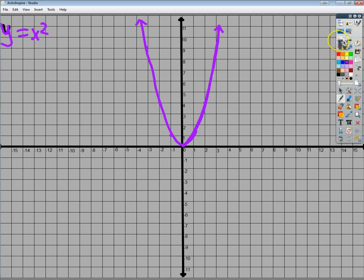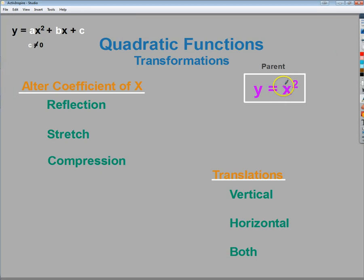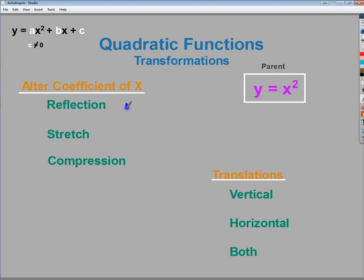Now, from here we're going to deal with the idea of what if we start altering the number, right now it's a 1, what if we alter that number in front of x squared? Specifically, we're going to start out with the idea of a reflection. A reflection would be what happens if I put a negative number in front of x squared.